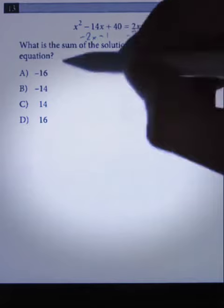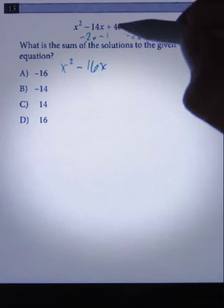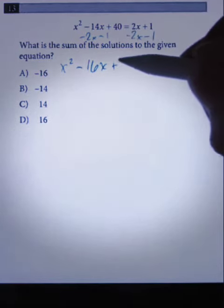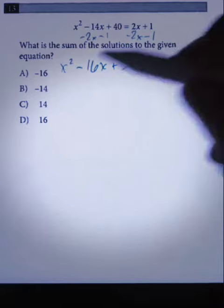from both sides. So then we get x squared minus 14x minus 2x, which is minus 16x, and then we have 40 minus 1 which is 39 equals 0. Okay, so now I'm going to factor this.